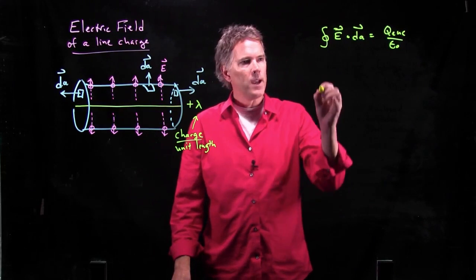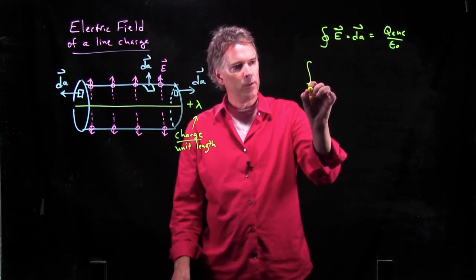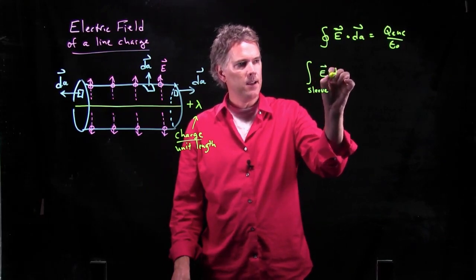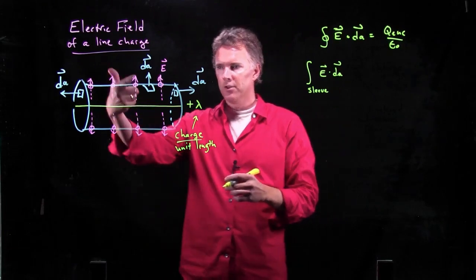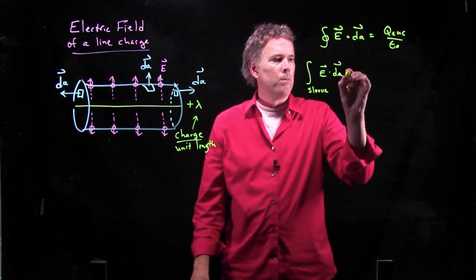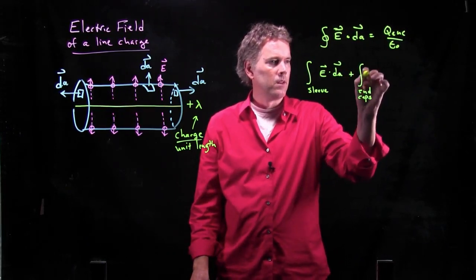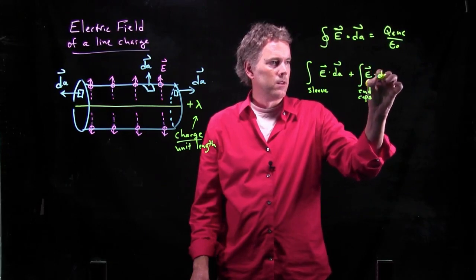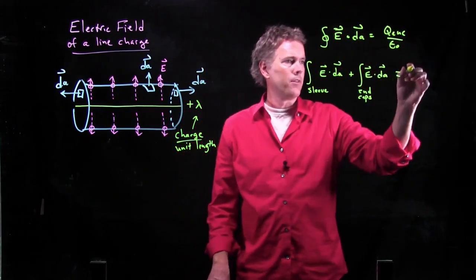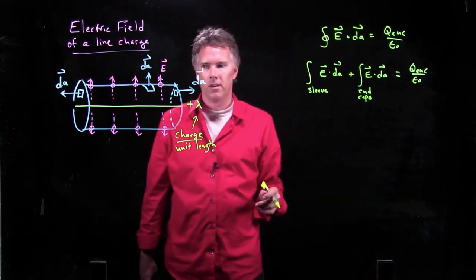So what does the integral become? We have two integrals now. We have to integrate over the sleeve of E dot dA. And sleeve just means this portion of the can. But we have to also add the end caps. And that's what the left side of this thing becomes. Everything on the right side, Q enclosed over epsilon naught.